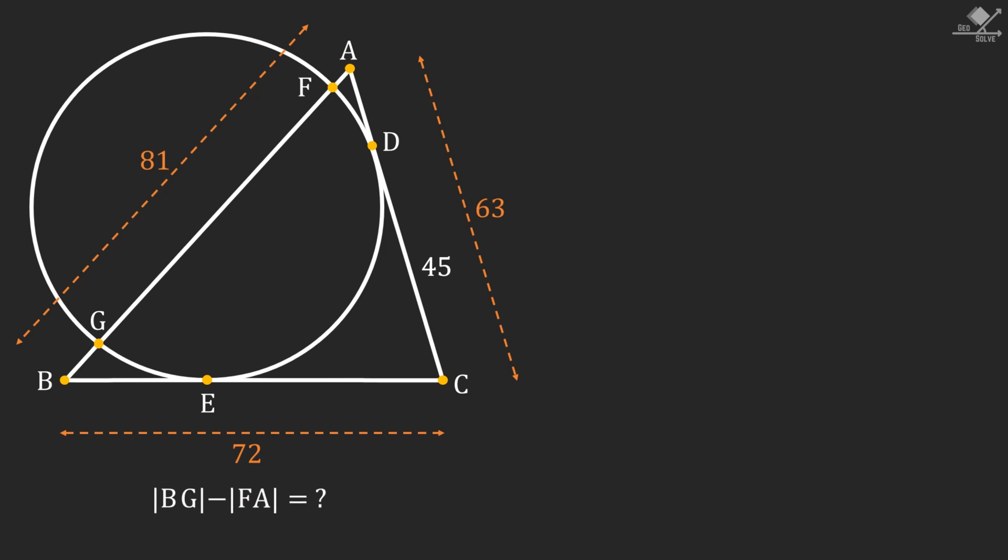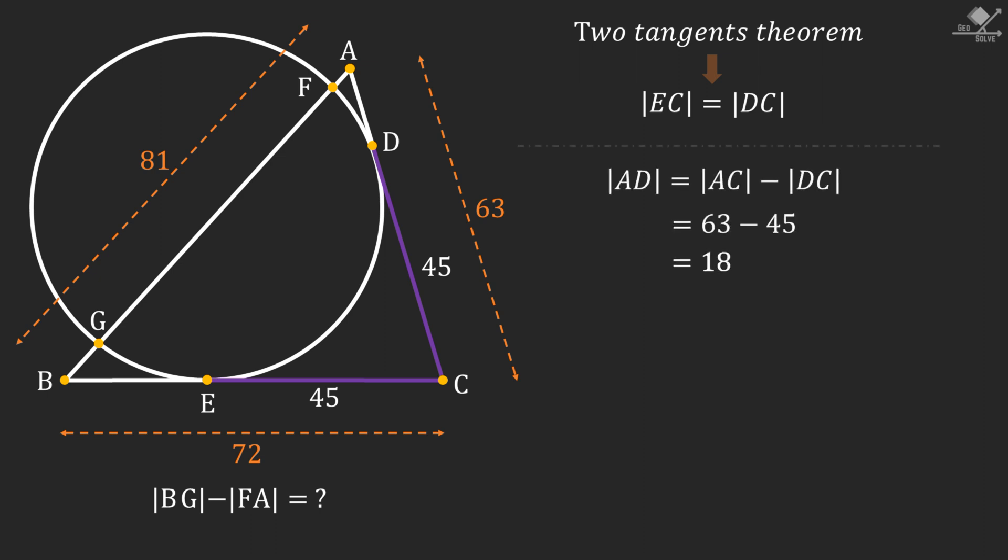First, using two tangents theorem we can see that line segment EC is equal to line segment DC. Also, we can find the length of the line segment AD as AC minus DC, and that gives AD as 18 units. Similarly, we can find the length of the line segment BE as BC minus EC, and that gives BE as 27 units.